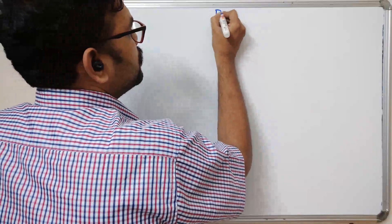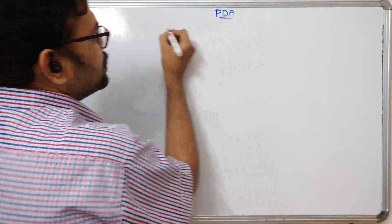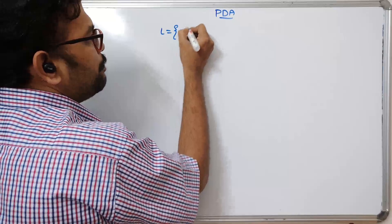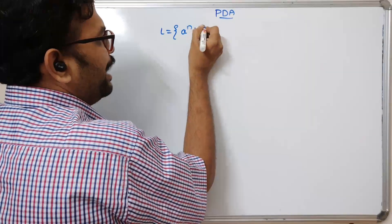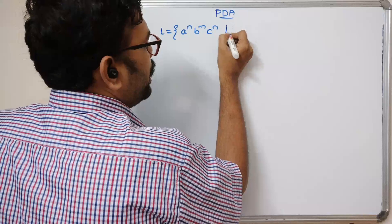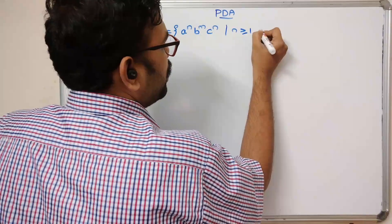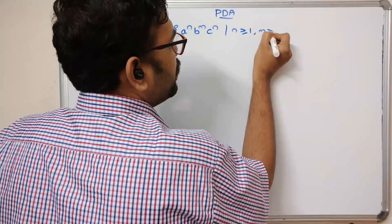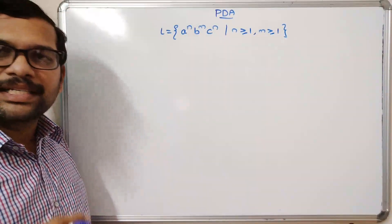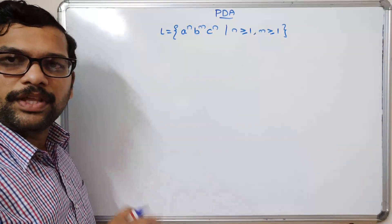Let us consider the language L = a^n b^m c^n, where n ≥ 1 and m ≥ 1. This is the language for which we need to construct the PDA. First let us write all the acceptable strings for this language.